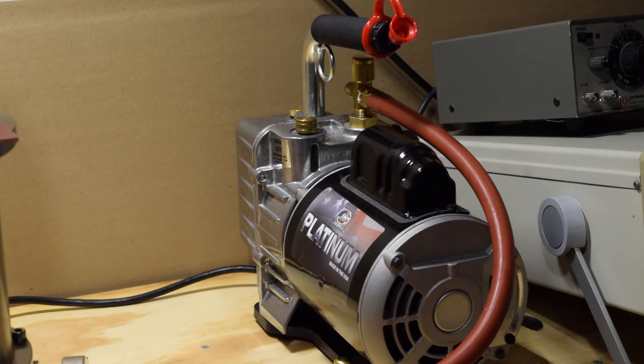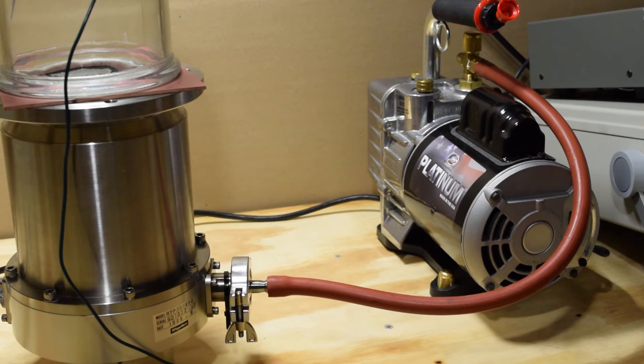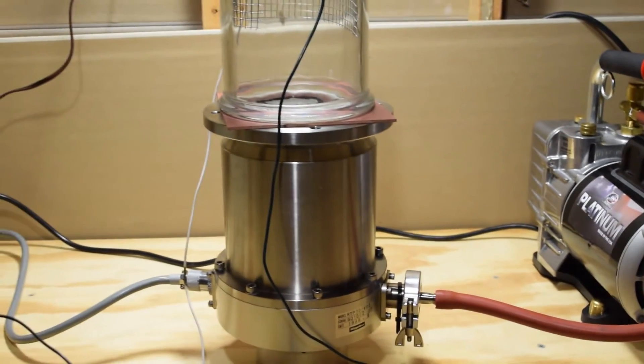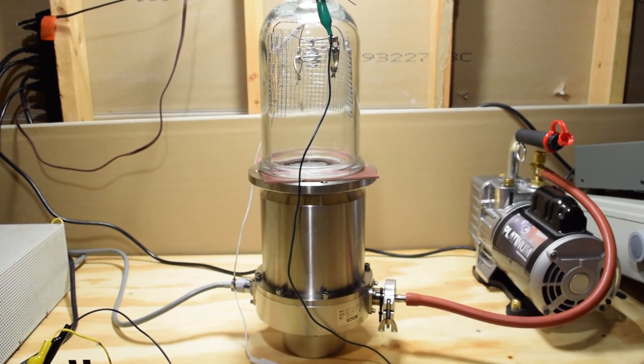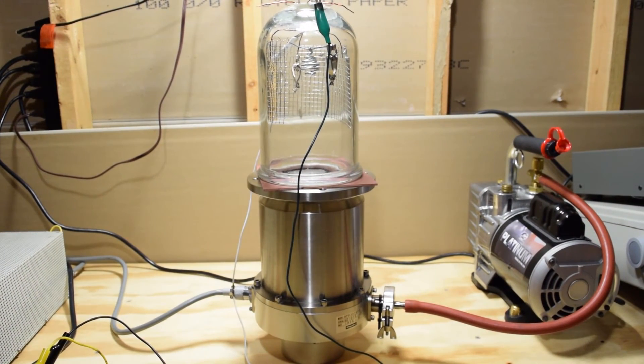The vacuum system starts at this JB Platinum DV85N vacuum pump. This pulls an initial pressure that allows the turbomolecular pump to be started. To learn more about this turbomolecular pump and how it works, check out one of my previous videos where I actually showcase the turbomolecular pump itself. Right now, the pump is simply connected with a rubber hose. This is not ideal, and I have parts in the mail that allow me to connect it fully metal and fully with KF flanges.